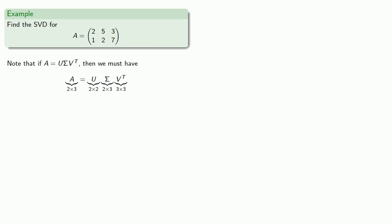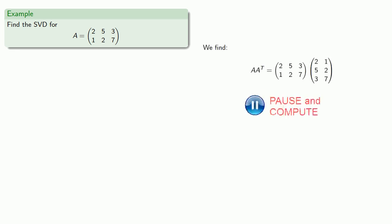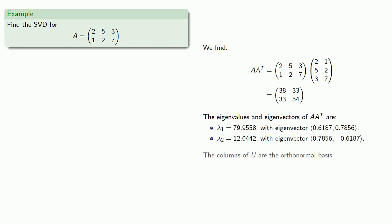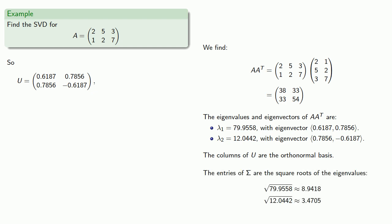And since V and V transpose are larger matrices, it might be easier to find the matrix U first. So we'll start out by finding A A transpose. We'll find the eigenvalues and eigenvectors of A A transpose, and the columns of U are going to be the orthonormal basis. And so we know that U has these normalized vectors as its column vectors. And the entries of sigma are the square roots of the eigenvalues, and we'll conveniently put them in order.